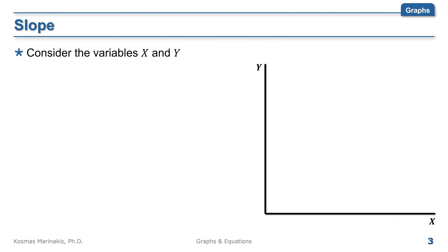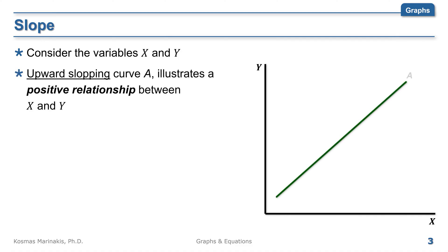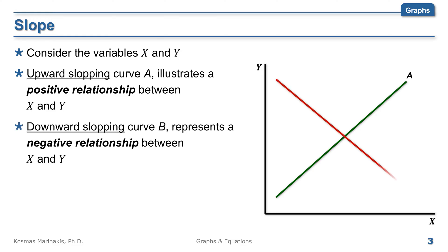You can imagine that they are whatever you want them to be. Curve A is upward sloping, illustrating a positive relationship between x and y. This means that as x increases, y increases too. On the contrary, curve B reveals a negative relationship between the two variables. Since as x increases, y decreases along curve B.